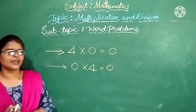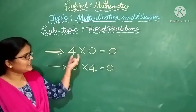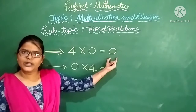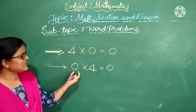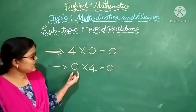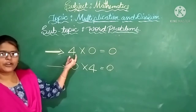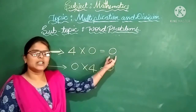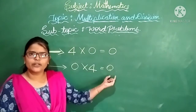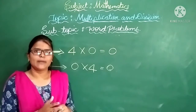There are two important points to remember in multiplication. First point: whenever you multiply any number with 0, the product will be 0 itself. Second point: if you multiply 0 with any number, the product will again be 0. These are the two important points to remember while multiplying two numbers.